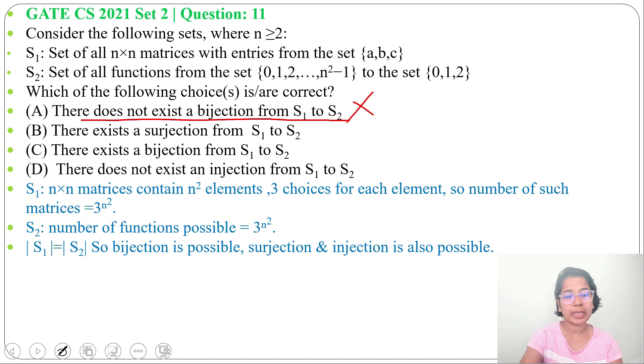Then option B: there exists a surjection from S₁ to S₂. Yes, this is true. Then option C: there exists a bijection from S₁ to S₂. This is true.